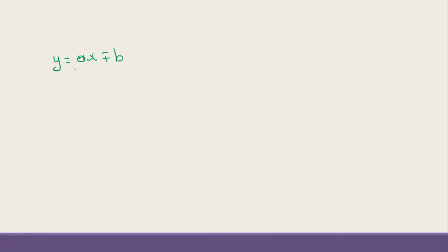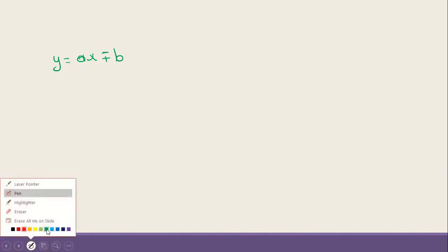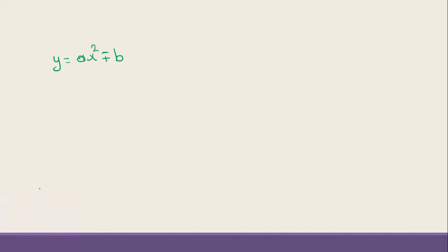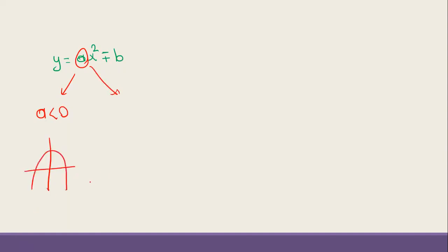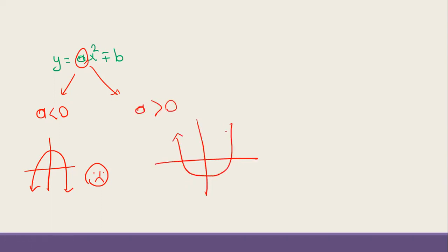Another important thing to know: for y = ax² + ..., if the coefficient in front of x² is negative — less than zero — the shape opens downward like a sad face with the arms upside down. If the coefficient is positive — greater than zero — the arms go up and it looks like a happy face.